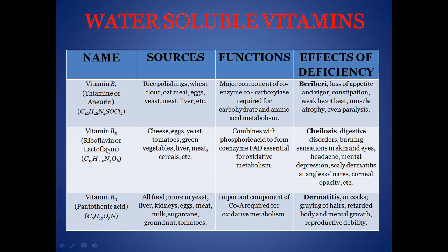Vitamin B2 is called riboflavin or lactoflavin. Its sources include cheese, eggs, yeast, and tomatoes. Its function is that it combines with phosphoric acid to form the coenzyme FAD, which is essential for oxidative metabolism. The effects of deficiency include burning sensations in the skin and eyes, headache, and mental depression.